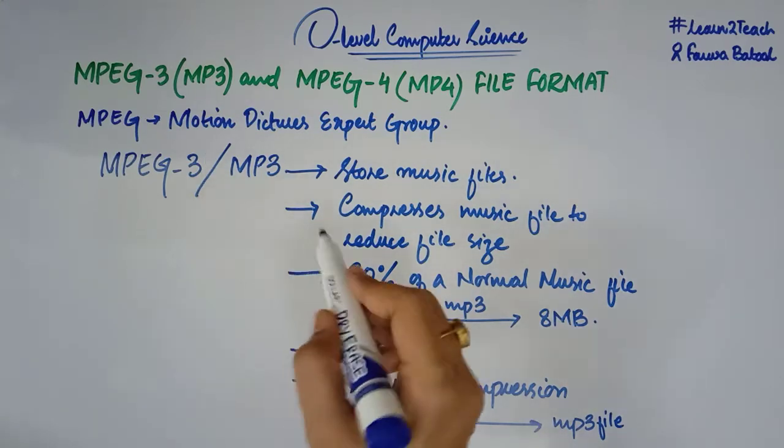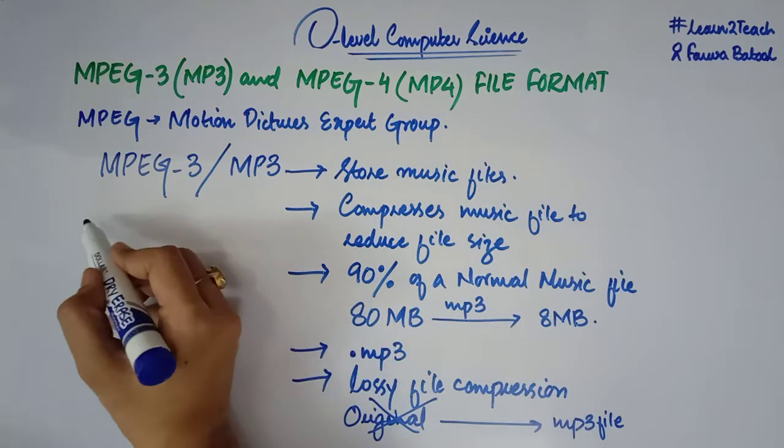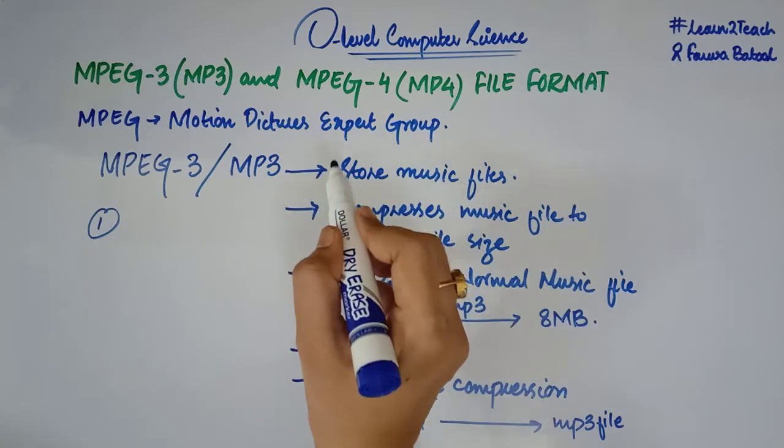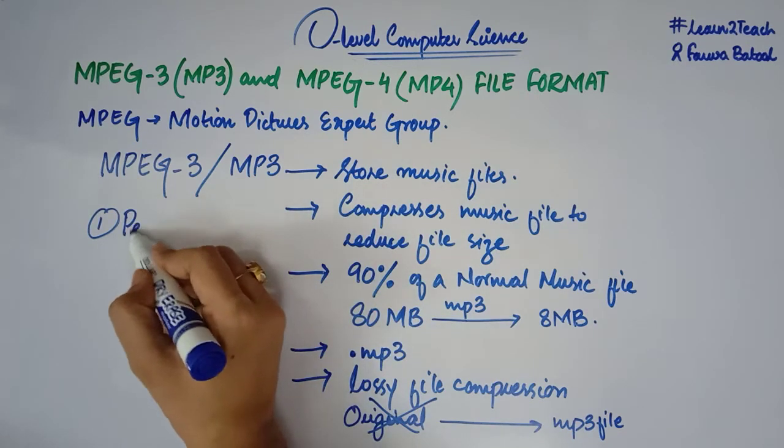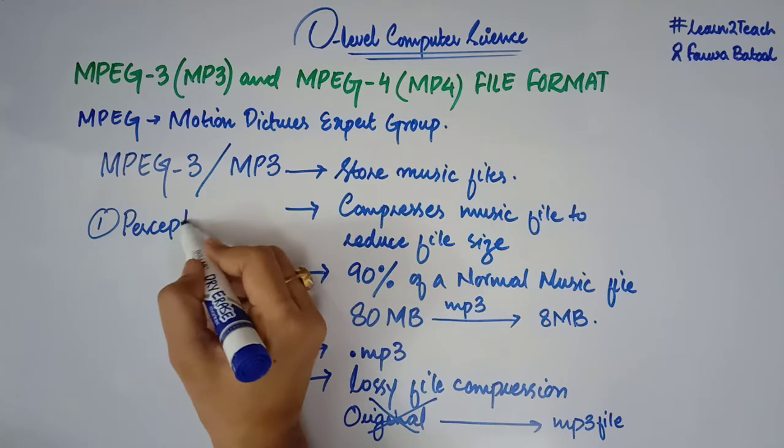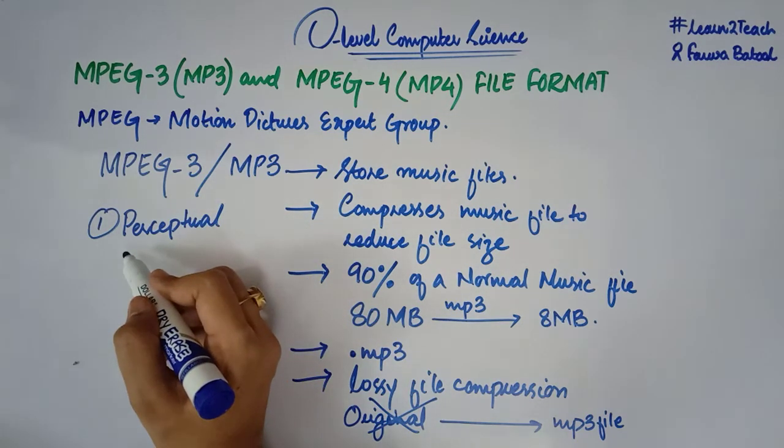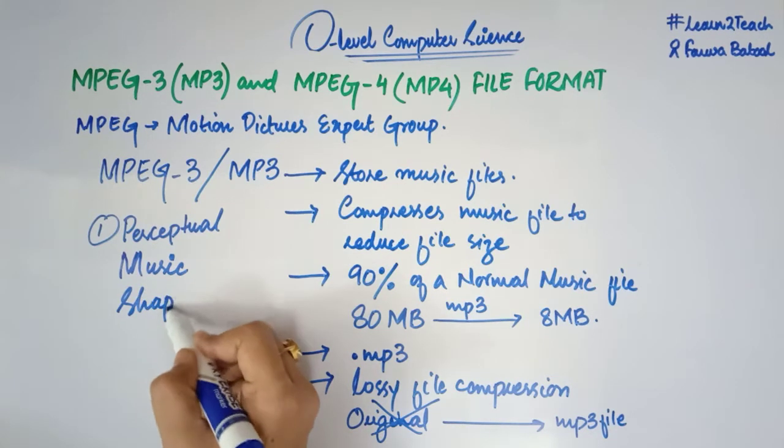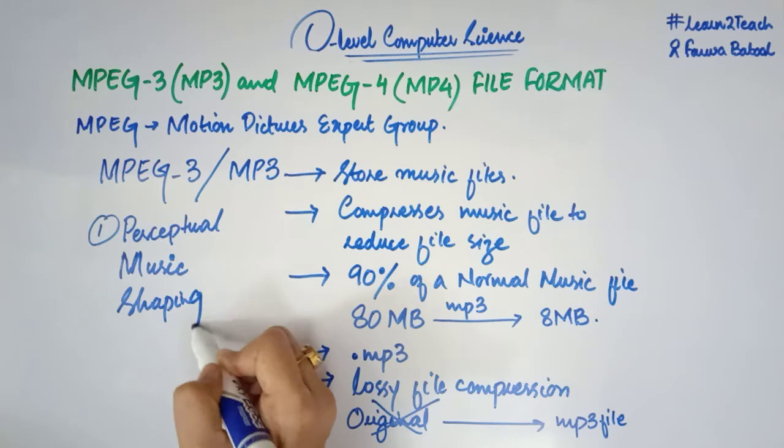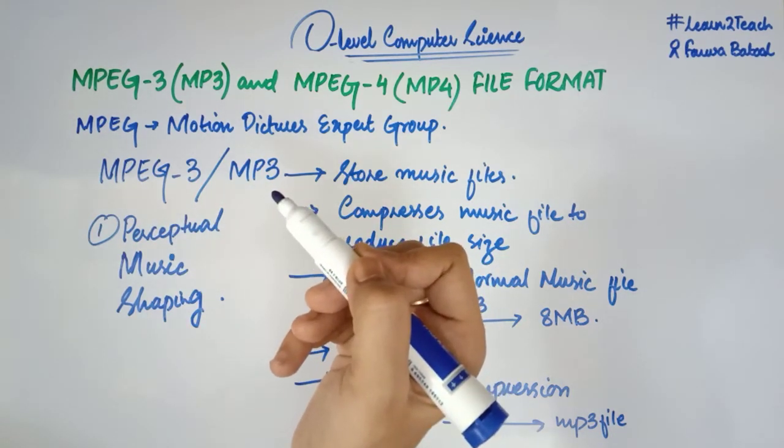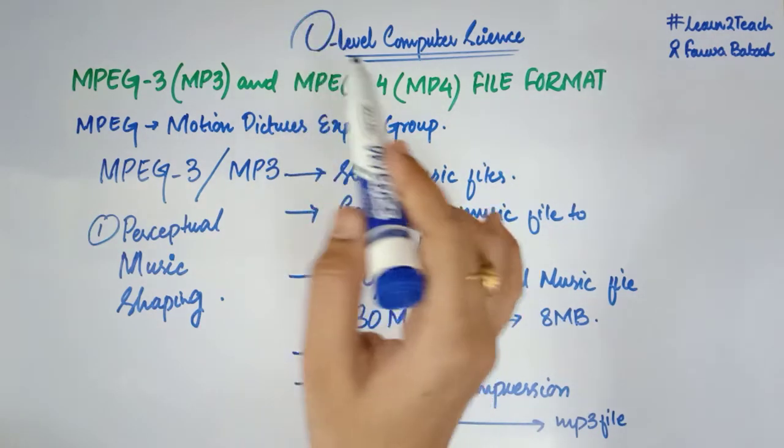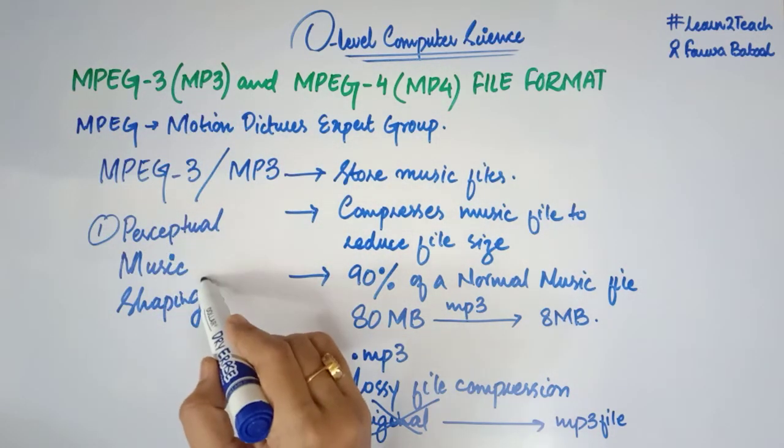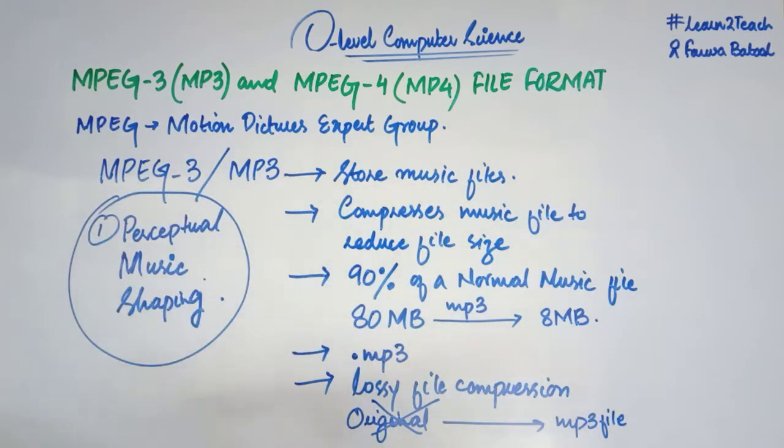One more thing, another that is the most important point among all these, is the compression algorithm that is being used to compress the files in an MP3 format uses perceptual music shaping. This is done using file compression algorithms. The file compression algorithm that is being used in this particular MP3 format uses perceptual music shaping.